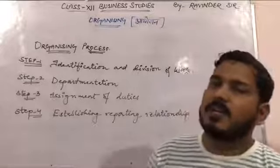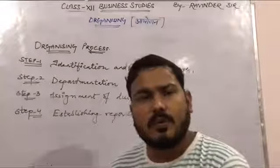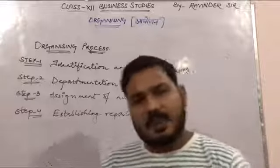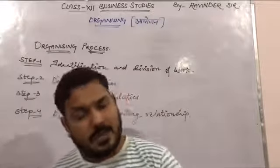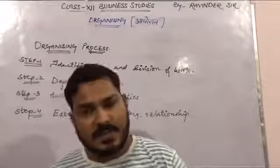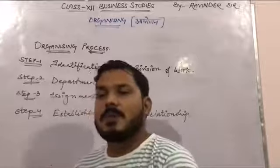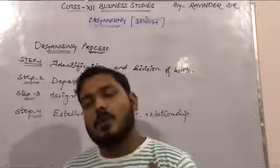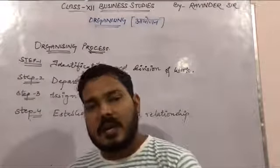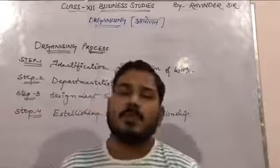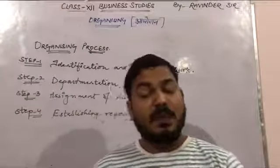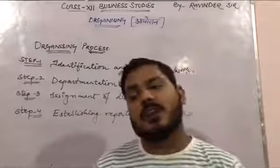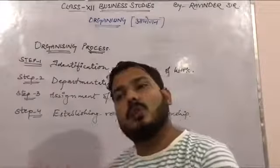The next step is assignment of duties. We have made departments, and we have also determined how many people will work in each. Now we have to tell them the actual work to be done — we need to allocate jobs. When we allocate jobs, we are moving beyond just departmentation; we are actually assigning individual work.